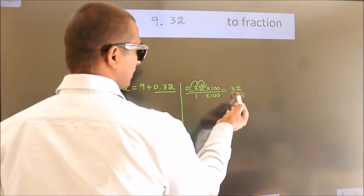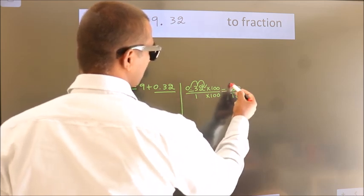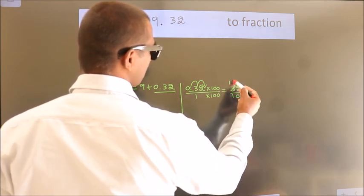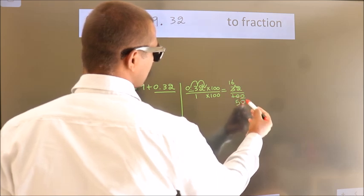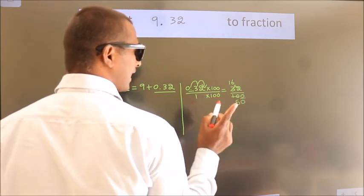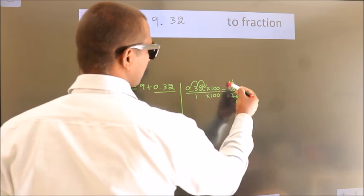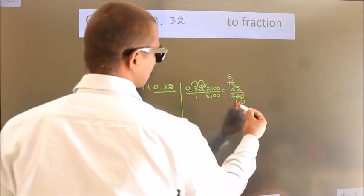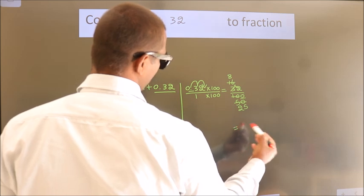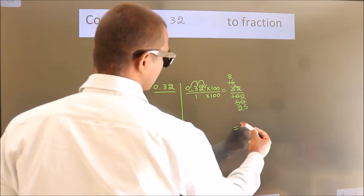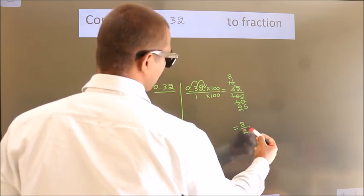Now cancel with 2. 2 1's, 2 6's, 2 5's. This 0 as it is down. Cancel with 2 again. 2 8's, 2 25's. So the fraction we got is 8 by 25.